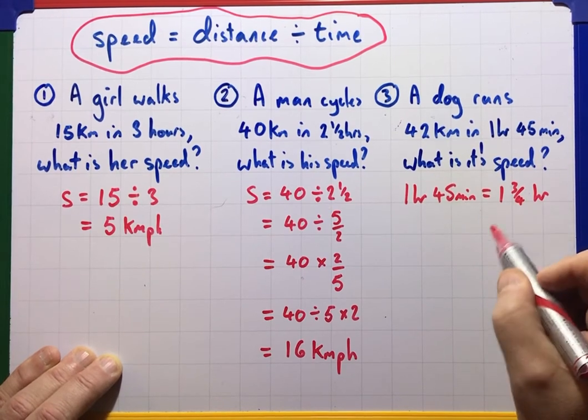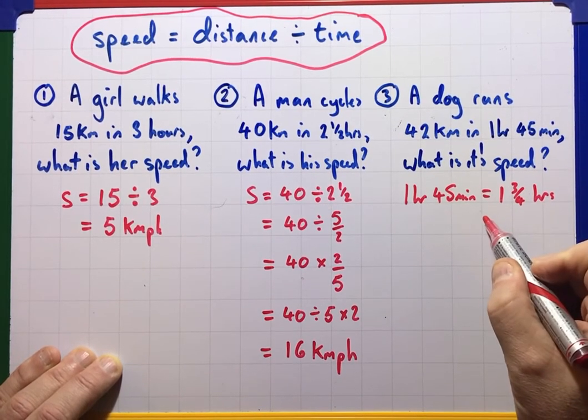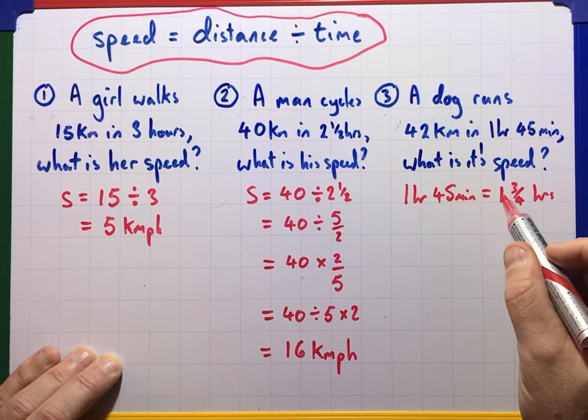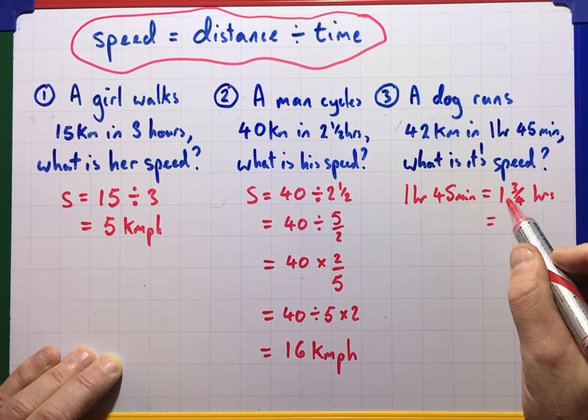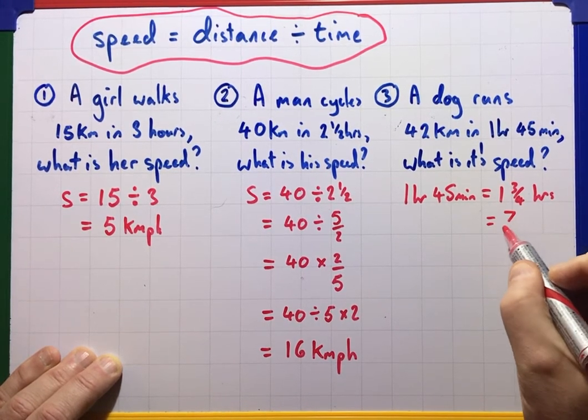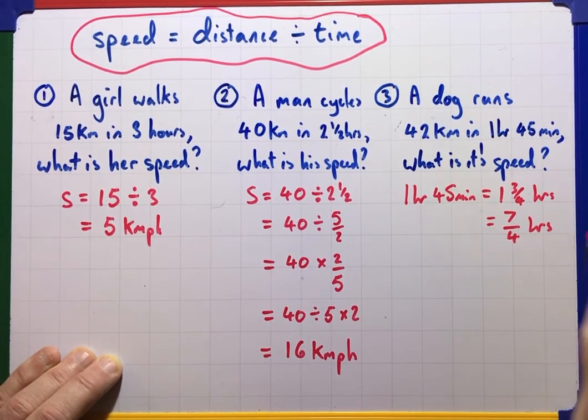Which, if we're writing it, remember we're going to want a top-heavy fraction. 1 is 4 quarters, so that's 7 over 4 as a top-heavy fraction in hours. We've now changed it to the form we want.